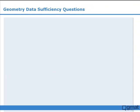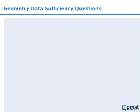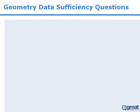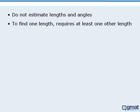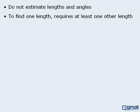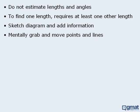In this lesson, we learned some tips for tackling data sufficiency questions involving geometric shapes. First, do not estimate lengths and angles. Second, to find one length, you must be given at least one other length. Third, sketch the diagram on your scrap paper and add information to it. And fourth, mentally grab points and lines on the diagram and try to move them without breaking any of the restrictions you have been given.